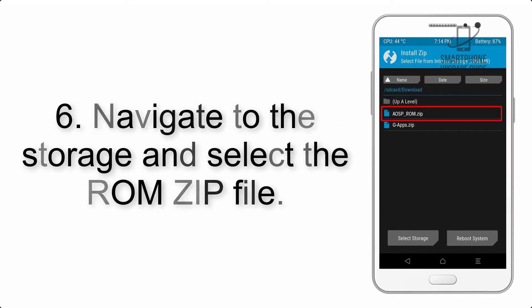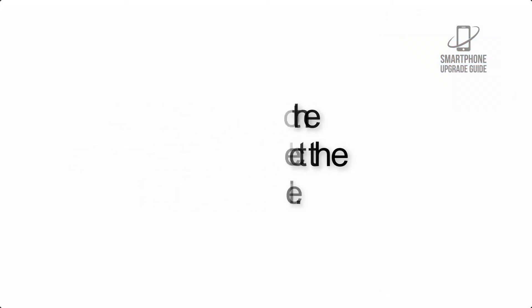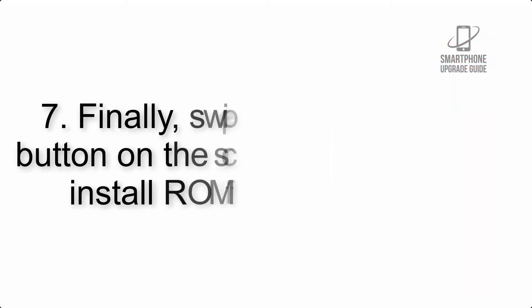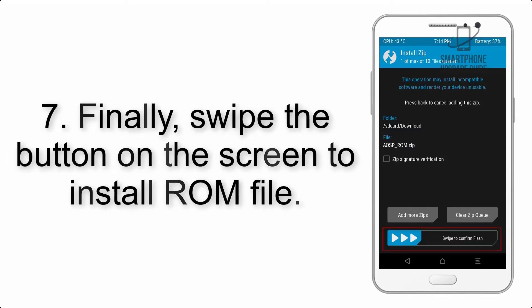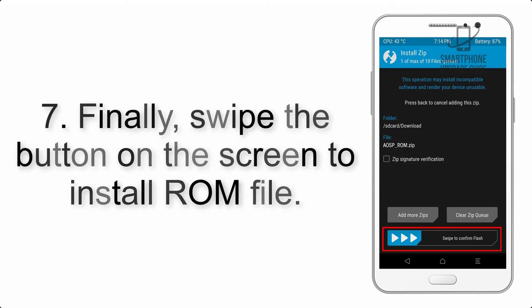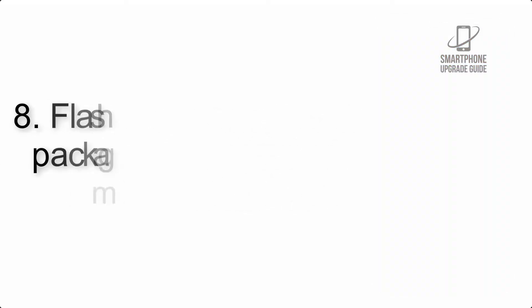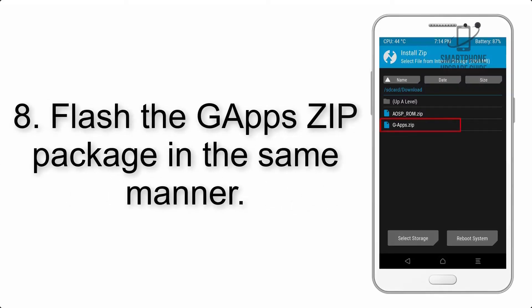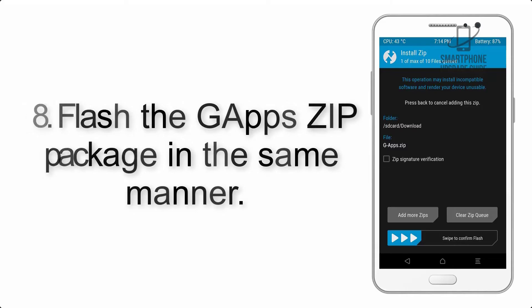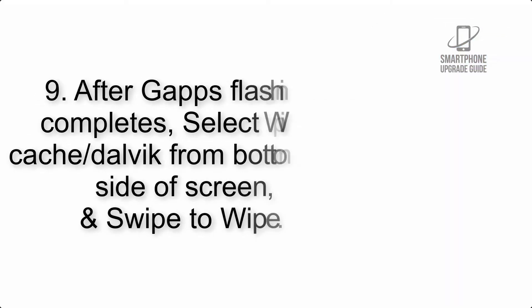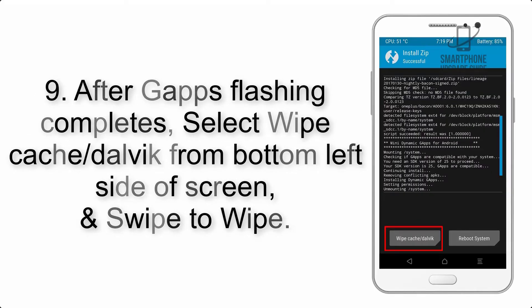Step 5: Go back to the recovery main screen and tap on the Install button. Step 6: Navigate to the storage and select the ROM zip file. Step 7: Finally, swipe the button on the screen to install the ROM file.